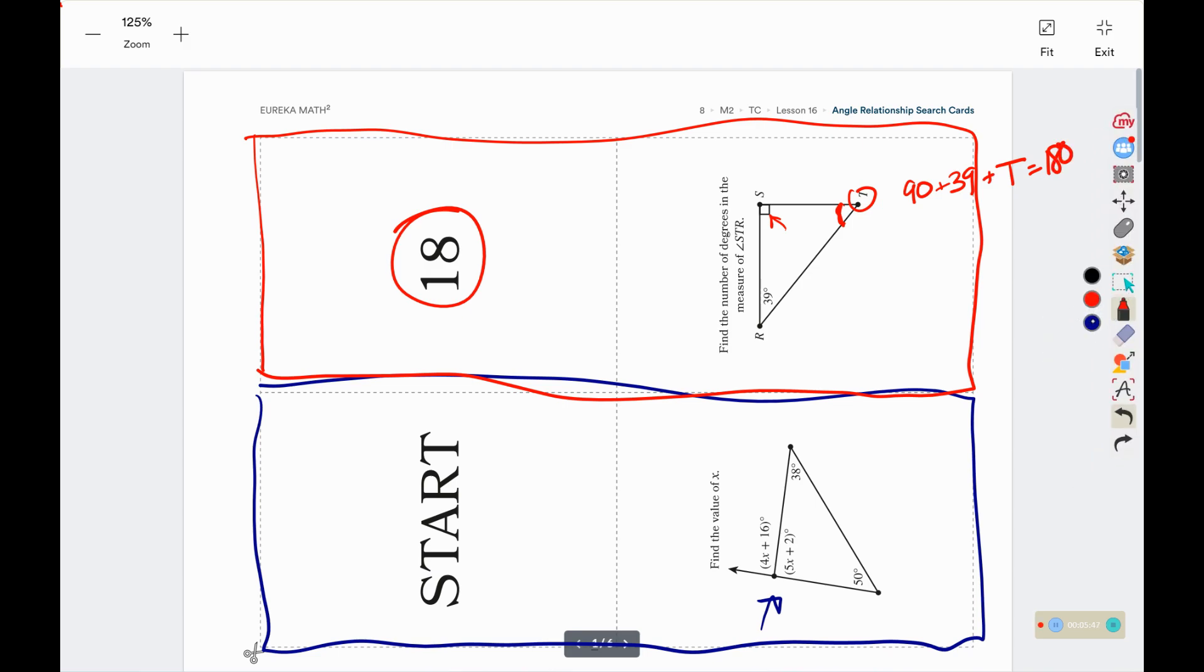So I'm combining like terms, that would be 129 plus that T angle for 180. And I'm going to move this over to the other side. And T equals, we'll borrow, 7 minus 2 is 5. T is 51 degrees. So now we'll look for the next card.